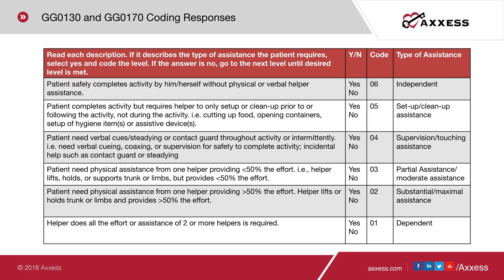Starting from the top: if the patient safely completes the activity by themselves without physical or verbal helper assistance, code 06, independent. If no, move to the next level: the patient completes the activity but requires a helper only for setup or cleanup prior to or following the activity — not during the activity. Examples include cutting up food, opening containers, or setting up hygiene items. If yes, code 05, setup/cleanup assistance.